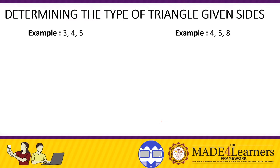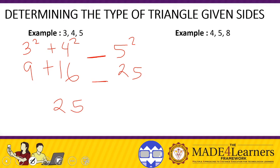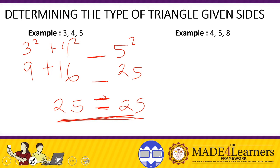For example one with sides 3, 4, and 5: we compute 3² + 4², which is 9 + 16 = 25. The square of the longest side is 5² = 25. Since 25 equals 25, the relationship is equal, so these sides form a right triangle.